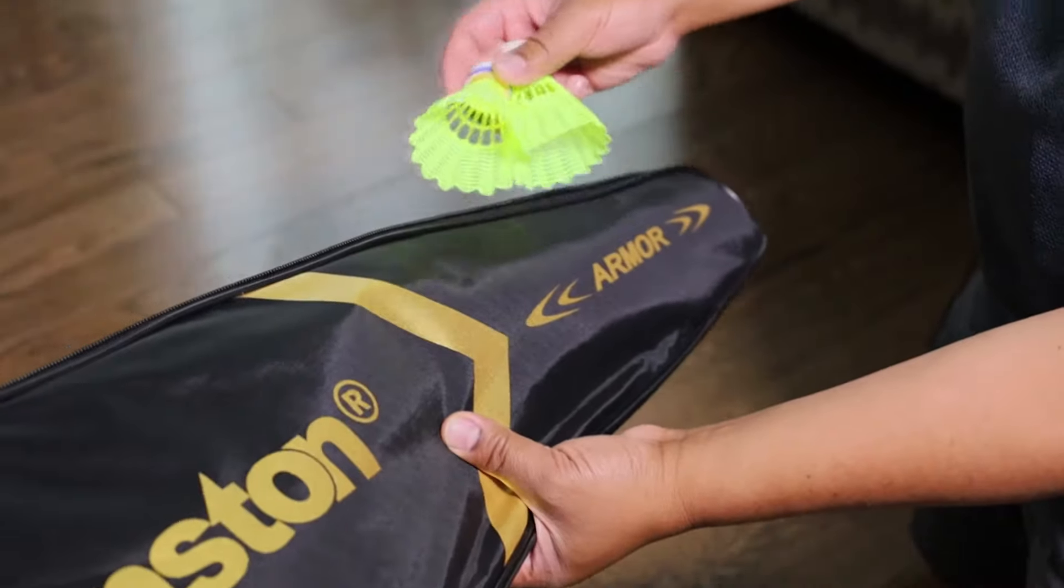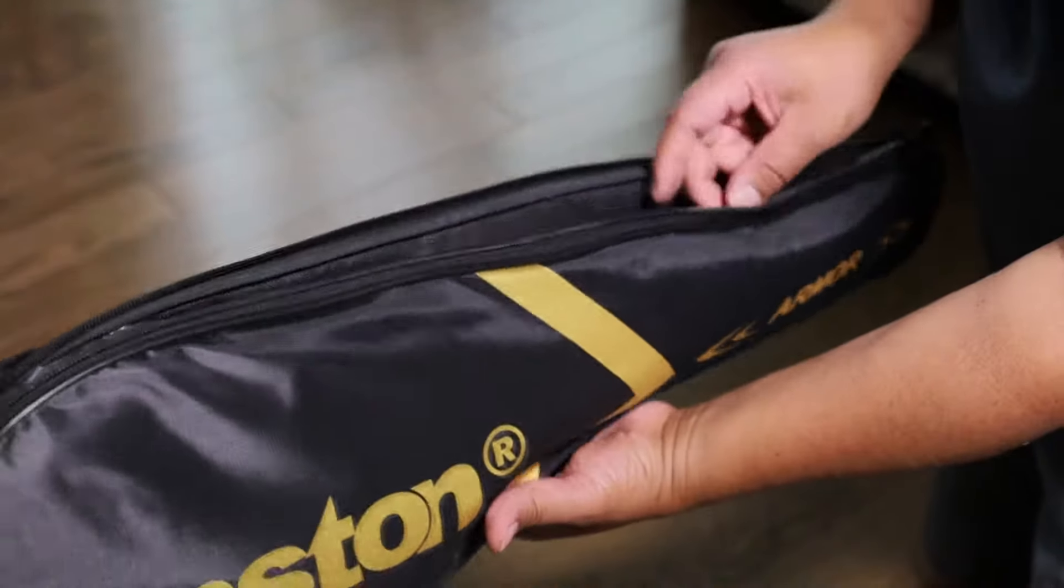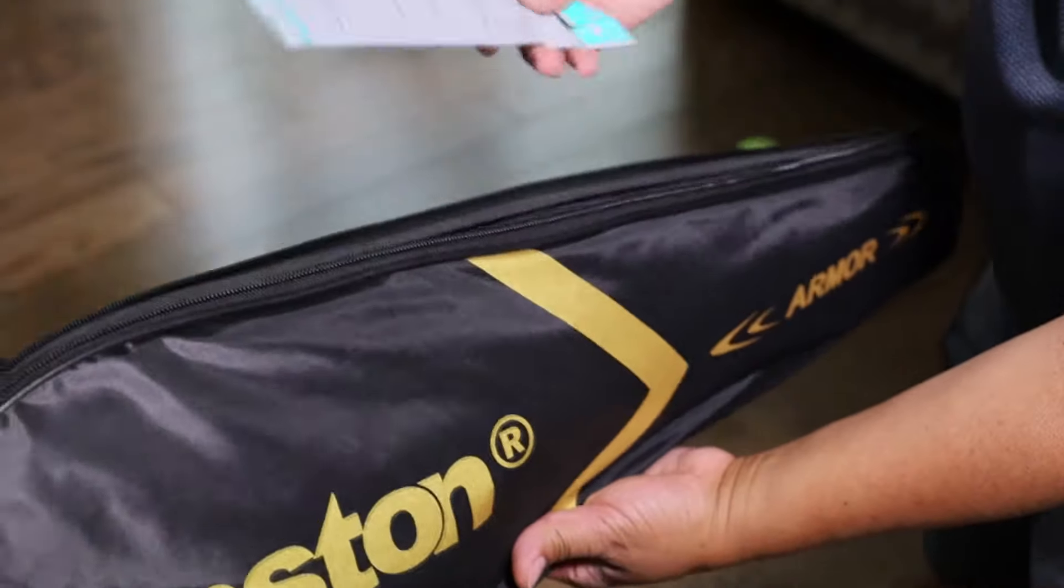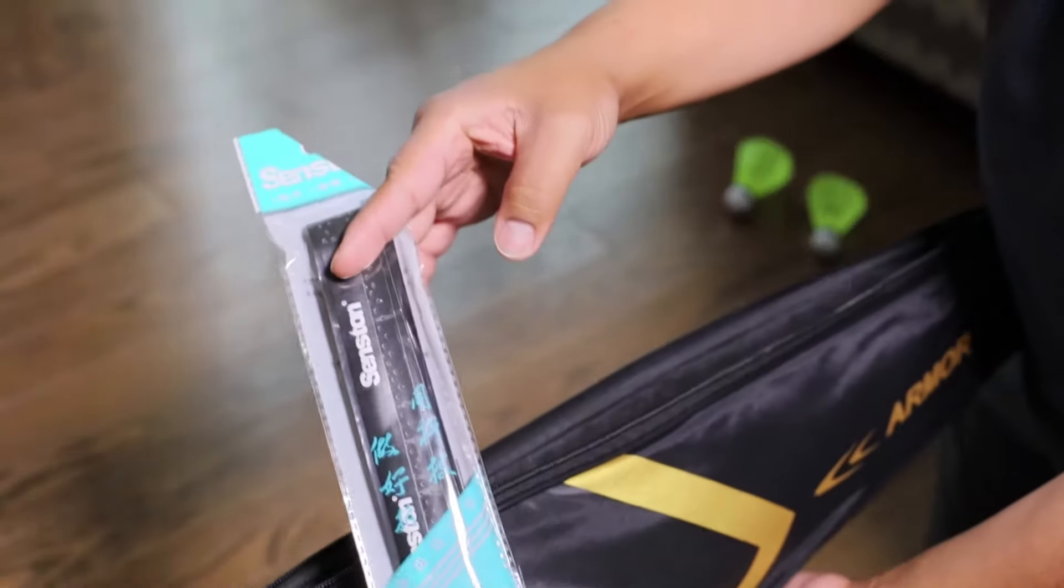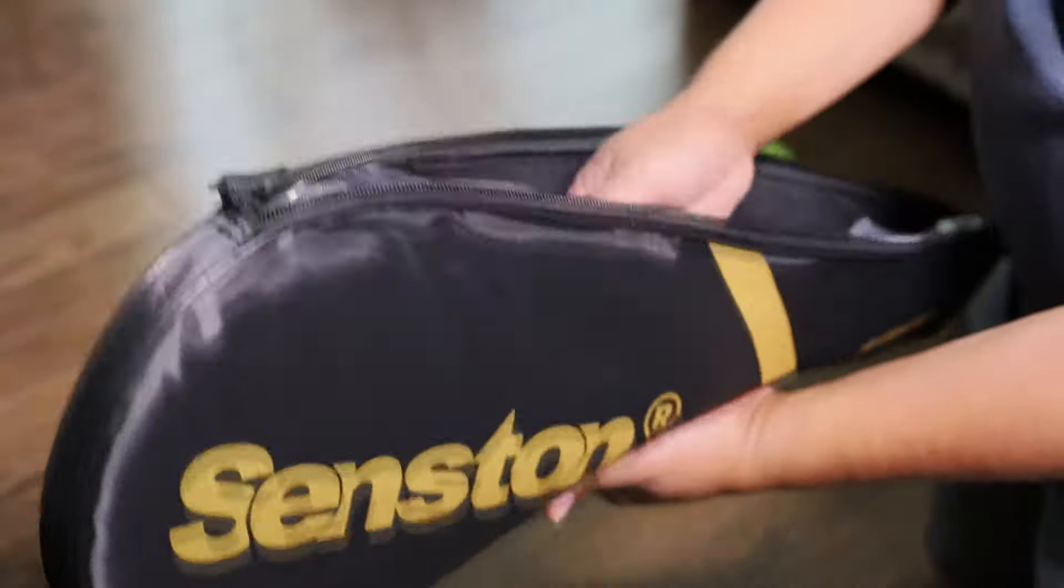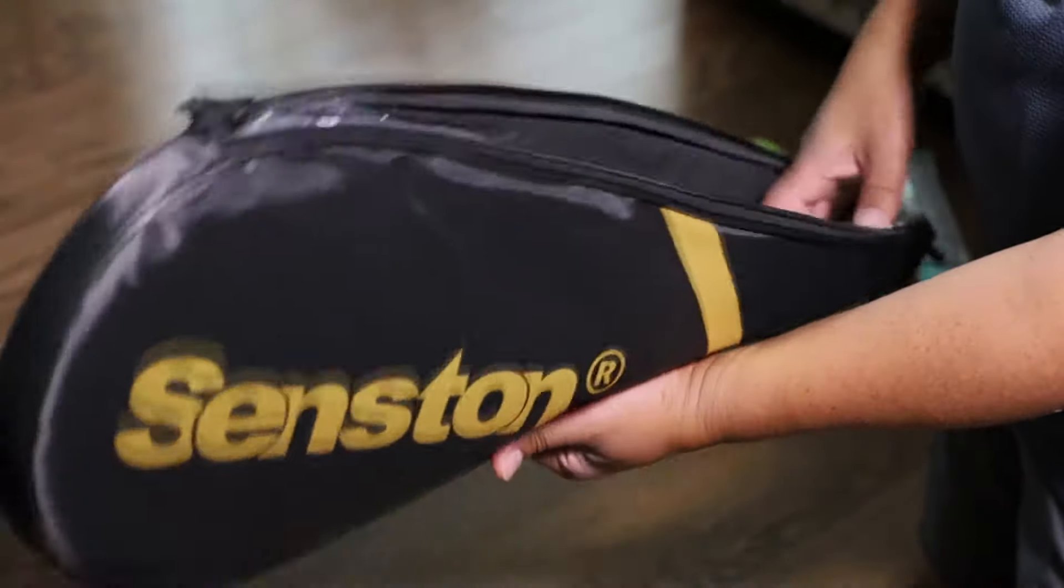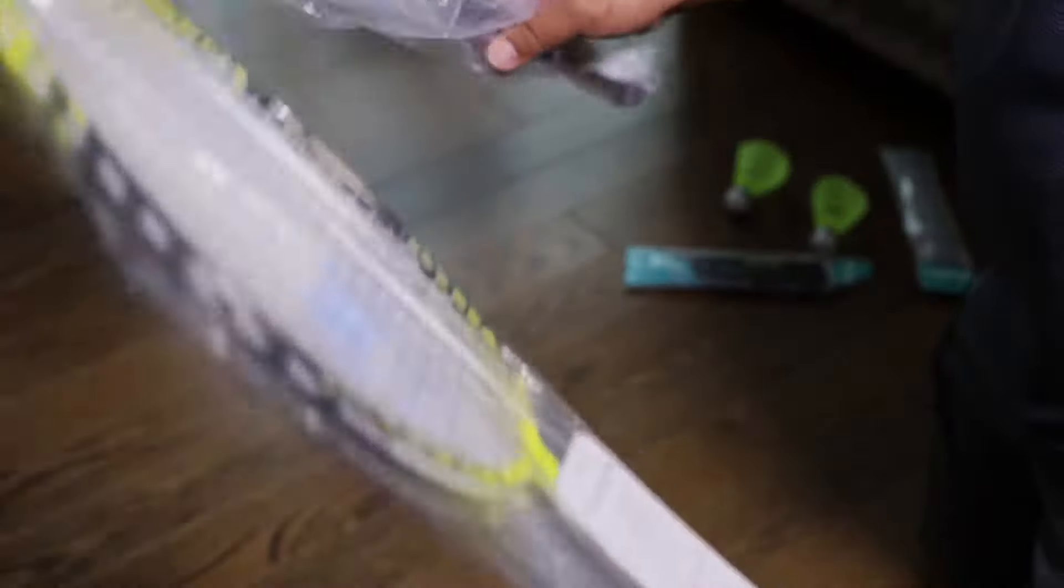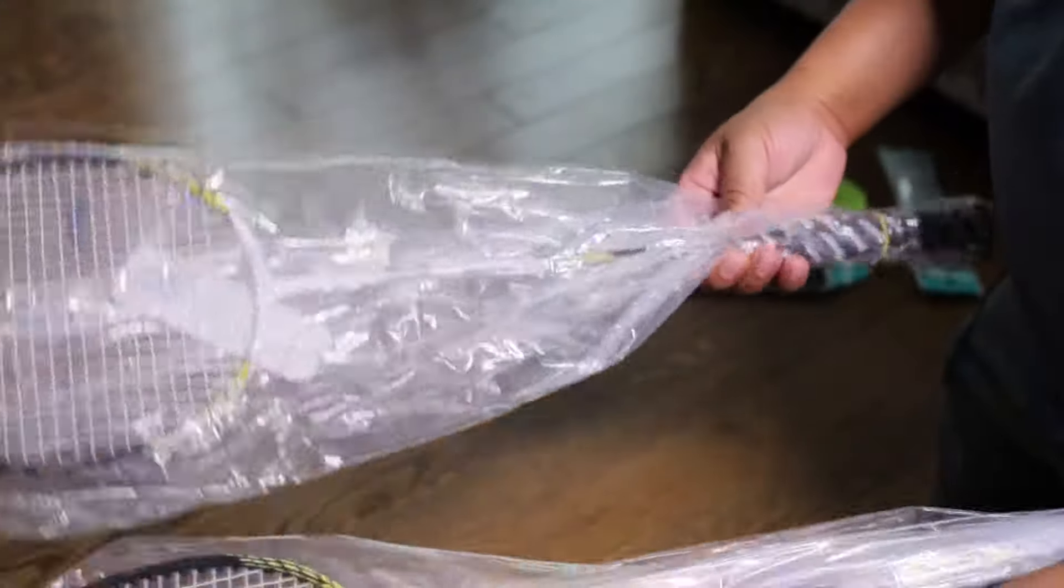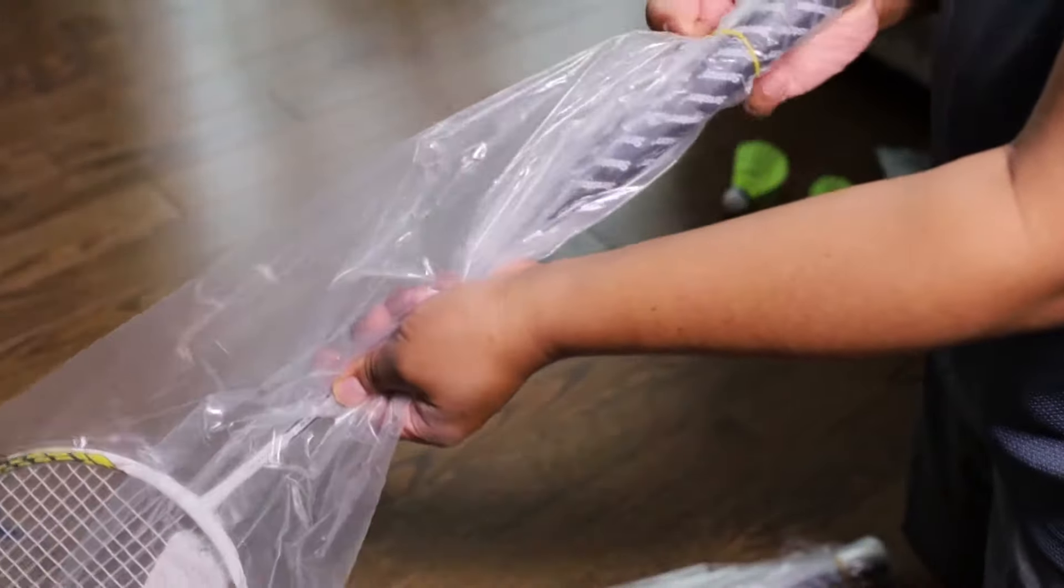So it just comes like that in the box, comes with two shuttles. See what else we got here. There's an extra set of grip and there's another extra set of grip, and of course the actual rackets themselves. We will take a closer look at these.